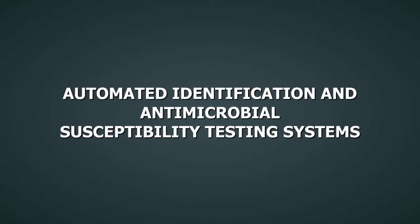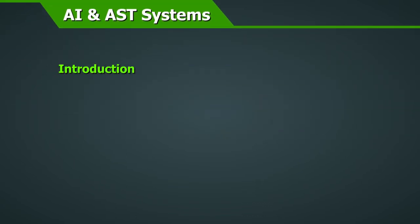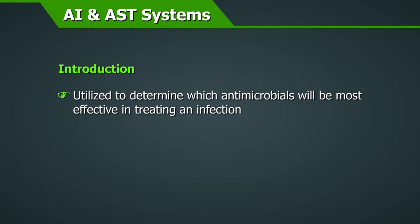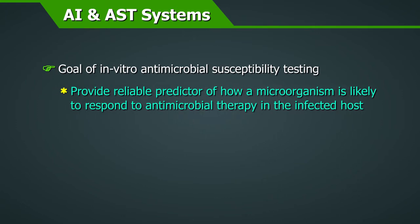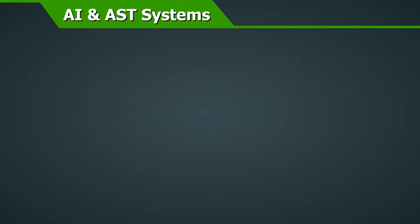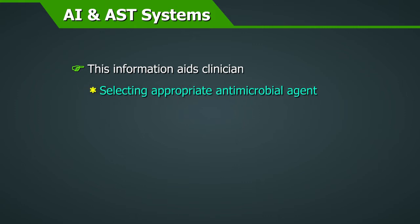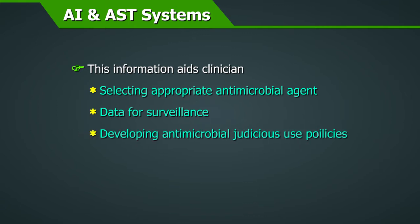Automated identification and antimicrobial susceptibility testing systems. Antimicrobial susceptibility testing systems are utilized to determine which antimicrobials will be most effective in treating an infection. The goal of in vitro antimicrobial susceptibility testing is to provide a reliable predictor of how a microorganism is likely to respond to antimicrobial therapy in the infected host. This information aids the clinician in selecting the appropriate antimicrobial agent, provides data for surveillance, and aids in developing antimicrobial judicious use policies.